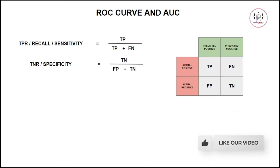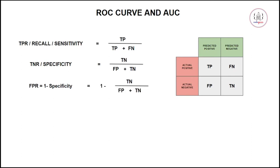Your true negative rate is given by: true negative divided by false positive plus true negative. True negative rate — also called specificity — is: out of all actual negative cases, how many are you able to identify correctly. Your false positive rate is 1 minus specificity, which works out to: false positive divided by false positive plus true negative.